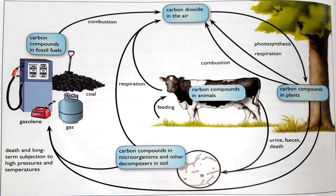Next is the carbon cycle. Respiration releases carbon dioxide into the air — this can be from animals or even dead organisms releasing CO₂. Photosynthesis absorbs carbon dioxide to make glucose.